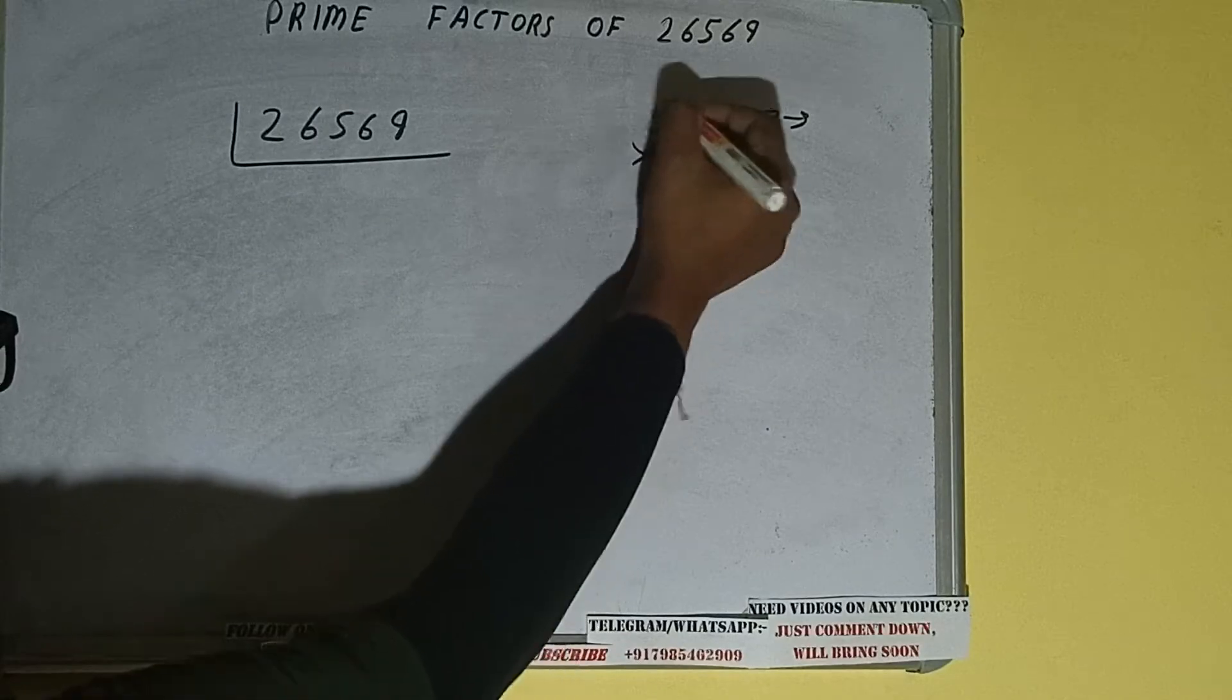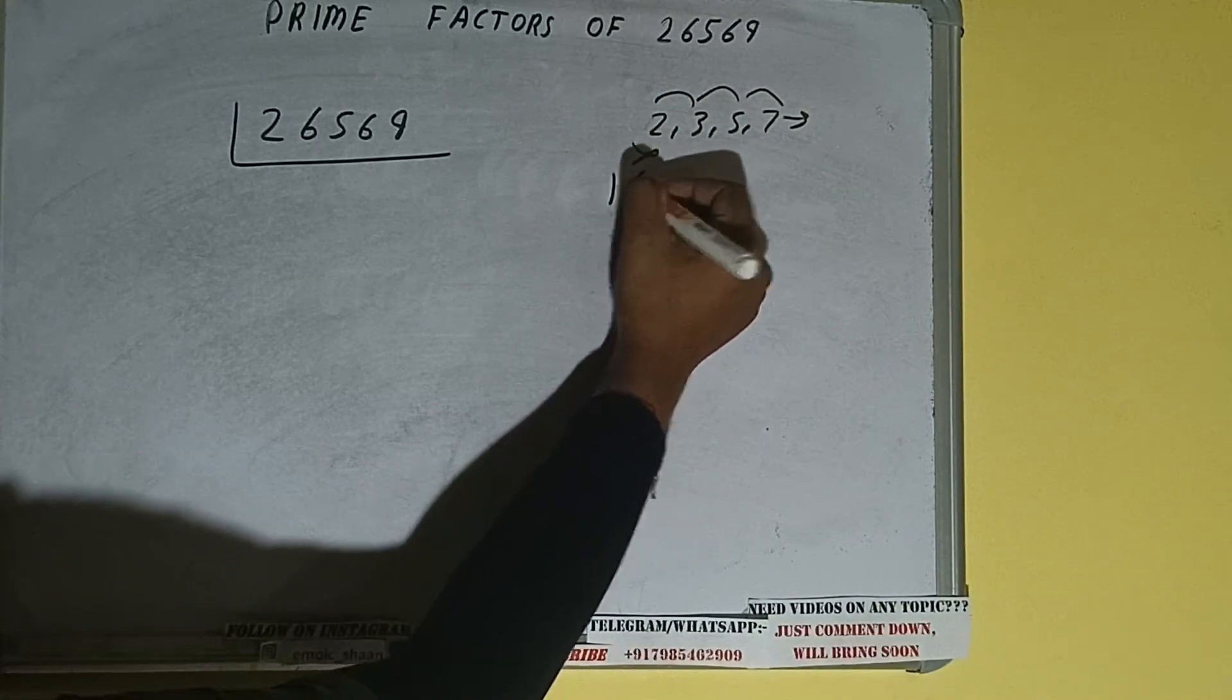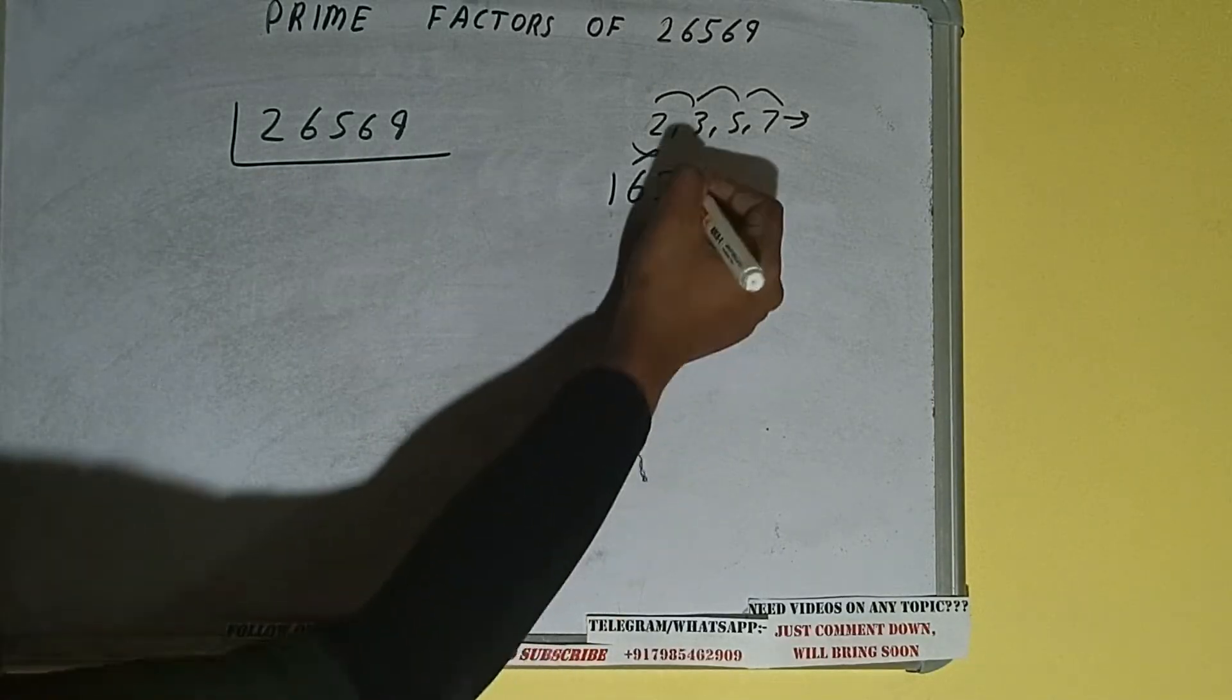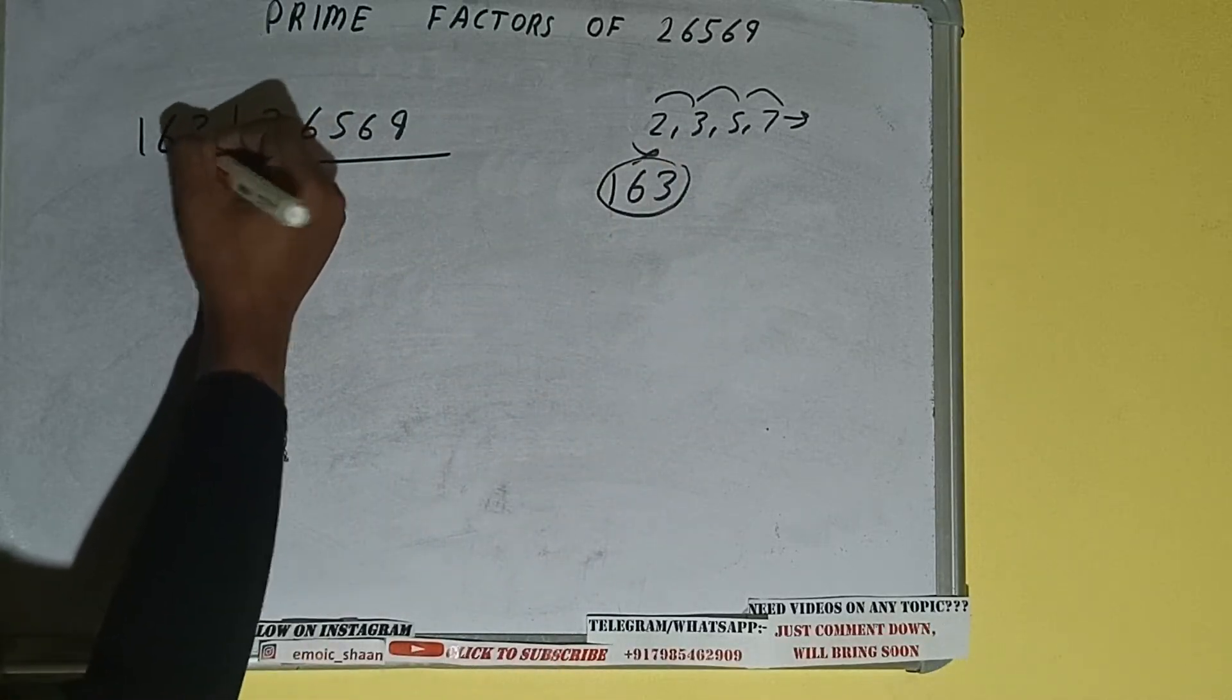...we'll reach the number 163 which will divide this number. Okay, and 163 is also a prime number. So if you'll write 163, it will go in 163 times...